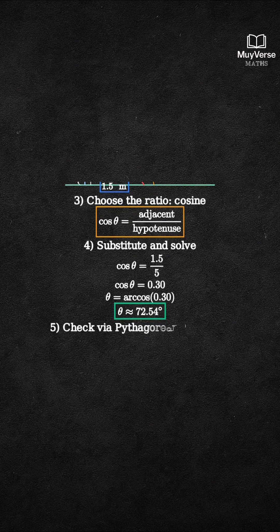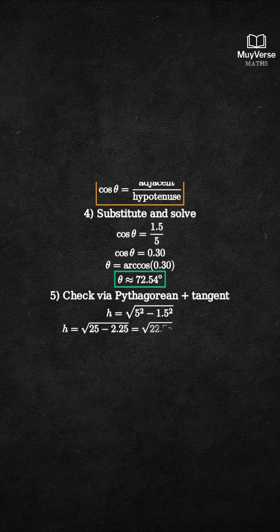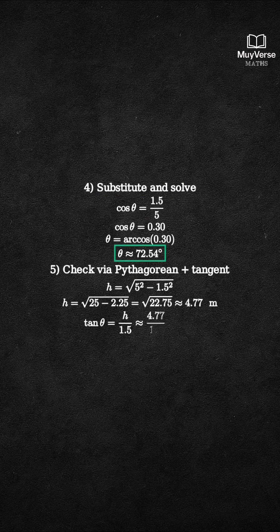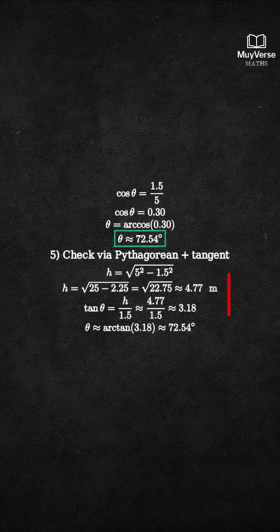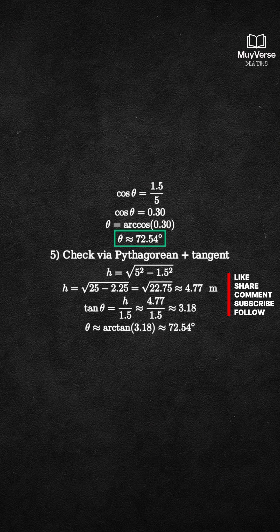Step 5. Optional check with the tangent ratio. First, use the Pythagorean theorem to find h equals square root of 5 squared minus 1.5 squared, which equals square root of 22.75, about 4.77 meters. Then tangent theta equals opposite over adjacent, 4.77 over 1.5, which is about 3.18, and arc tangent of 3.18 again gives about 72.54 degrees. The check matches our answer.